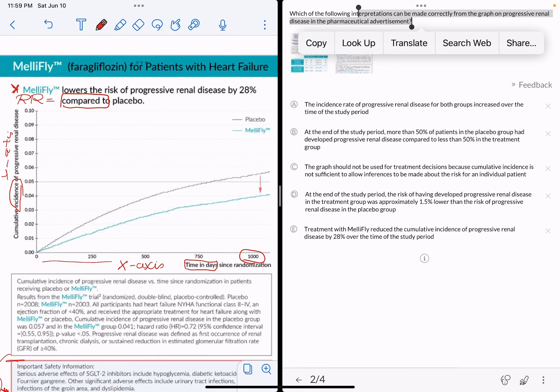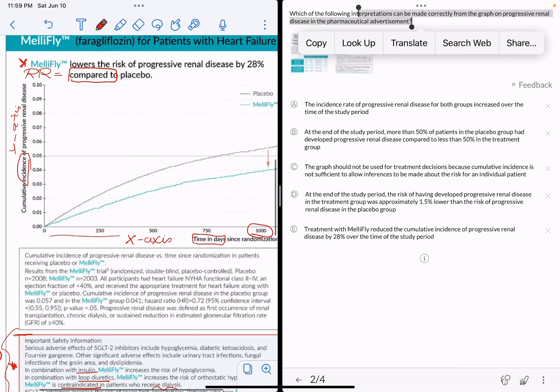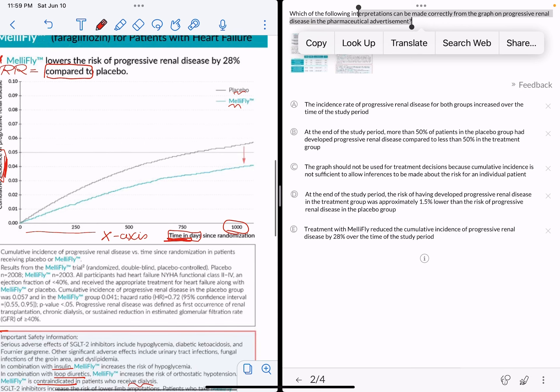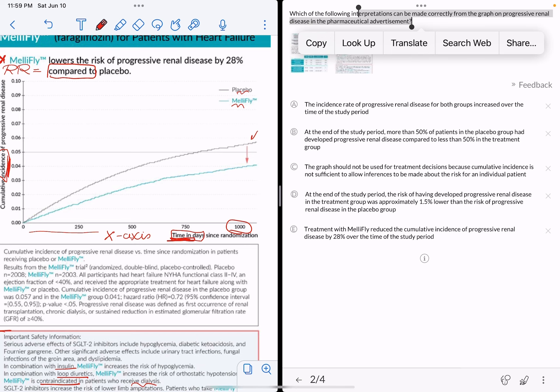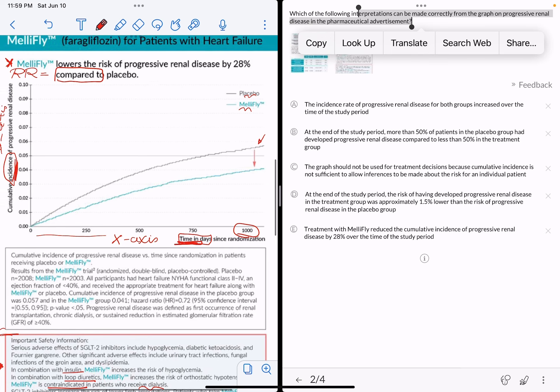Now what's on the graph here, which is incidence versus time, incidence over time of MelliFly, which is in blue, compared to placebo, which is in black. This is actually the true absolute value of the incidence that we've got to read. So with placebo, which is this black curve, black line...